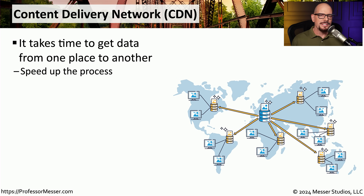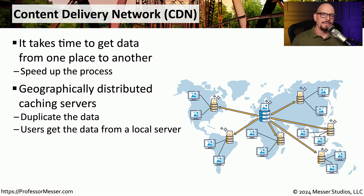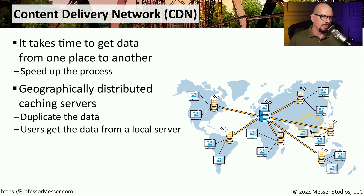One way to speed up the process of getting access to data is through the use of a CDN — a content delivery network. As the name implies, it is designed to provide a way to get data very efficiently from one central point to an end user. These are often set up in geographical areas, so there might be a CDN server in North America, South America, Africa, Asia, and other parts of the world, and you're able to cache information at each one of these points. It takes time to get data sent from one part of the world to the other.